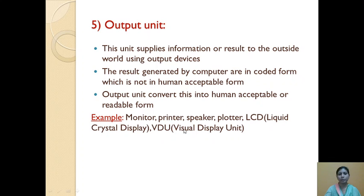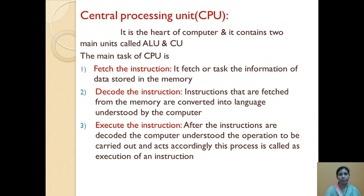The CPU (central processing unit) is the heart of the computer. It contains two main units: the ALU and the CU. The ALU is called the brain of the computer because actual mathematical calculations happen there. The combination of ALU and CU is called the CPU.